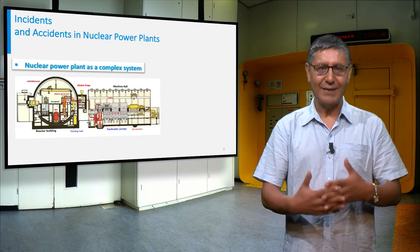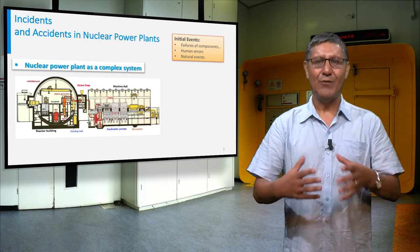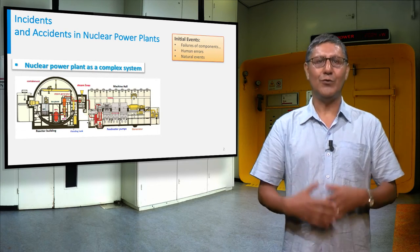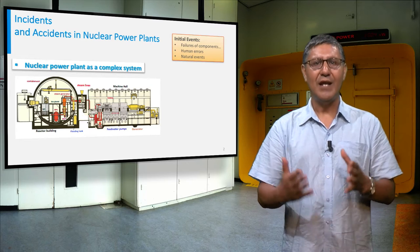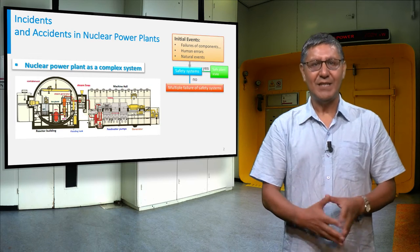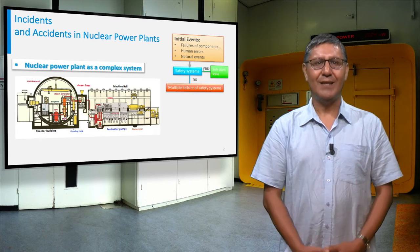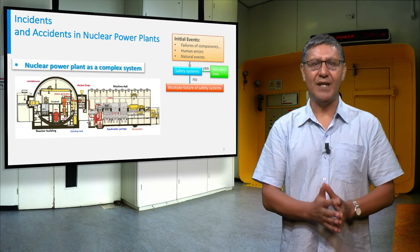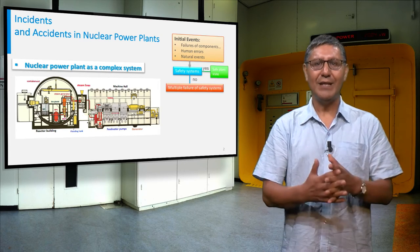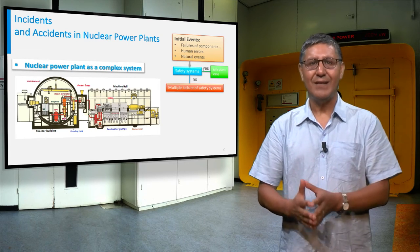During the lifetime of a plant, several events will take place, which can be caused by component failure, human errors, or a natural event. If the safety system works as designed, the plant will be brought to a safe state. If this doesn't happen and multiple safety systems fail, a severe accident might occur.